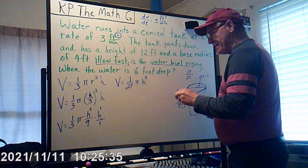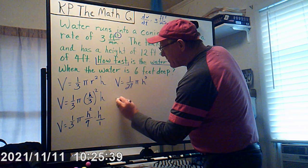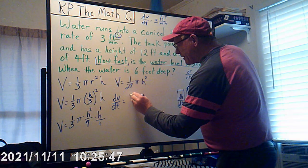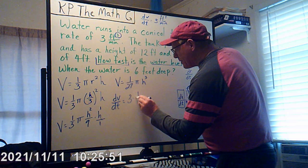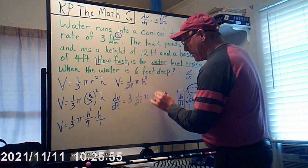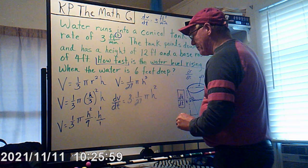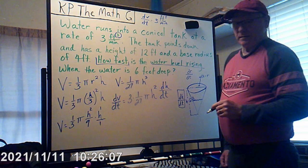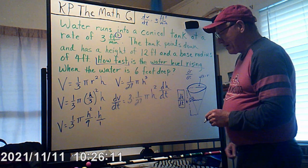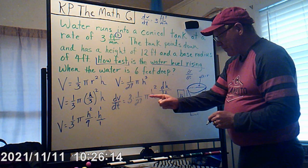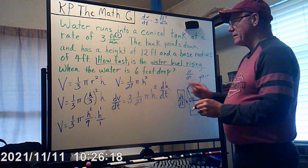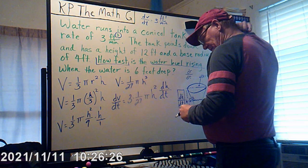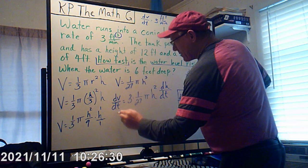Now we take the derivative. We have V = (π/27)h³, so applying the power rule: dV/dt = (3/27)π h² · dh/dt, which simplifies to dV/dt = (π/9)h² · dh/dt. We haven't plugged anything in yet — just taking the derivative.